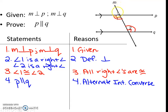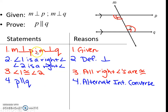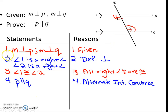Next one — note that the drawing isn't correct, but let's pretend these are perpendicular, 90 degrees. Given that M and P are perpendicular and M and Q are perpendicular, prove that P and Q are parallel to each other. Number 1: M and P are perpendicular, M and Q are perpendicular — given. Number 2: angle 1 is a right angle and angle 2 is a right angle — definition of perpendicular. Number 3: angle 1 and angle 2 are congruent — all right angles are congruent. Therefore P is parallel to Q — alternate interior angles converse. Please pause the video and write these down.